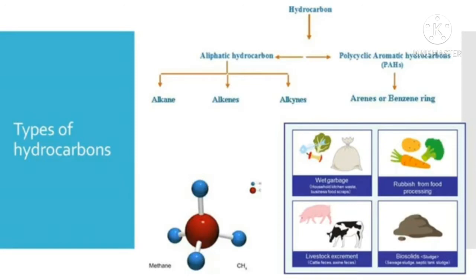Types of hydrocarbons: In hydrocarbons, carbon and hydrogen atoms are linked together through different chemical bonds. Depending on the bond between these atoms, there are a number of hydrocarbons. The four general classes of hydrocarbons are alkanes, alkenes, alkynes and arenes. Some of the common hydrocarbons are methane, ethane, propane, butane and pentane.